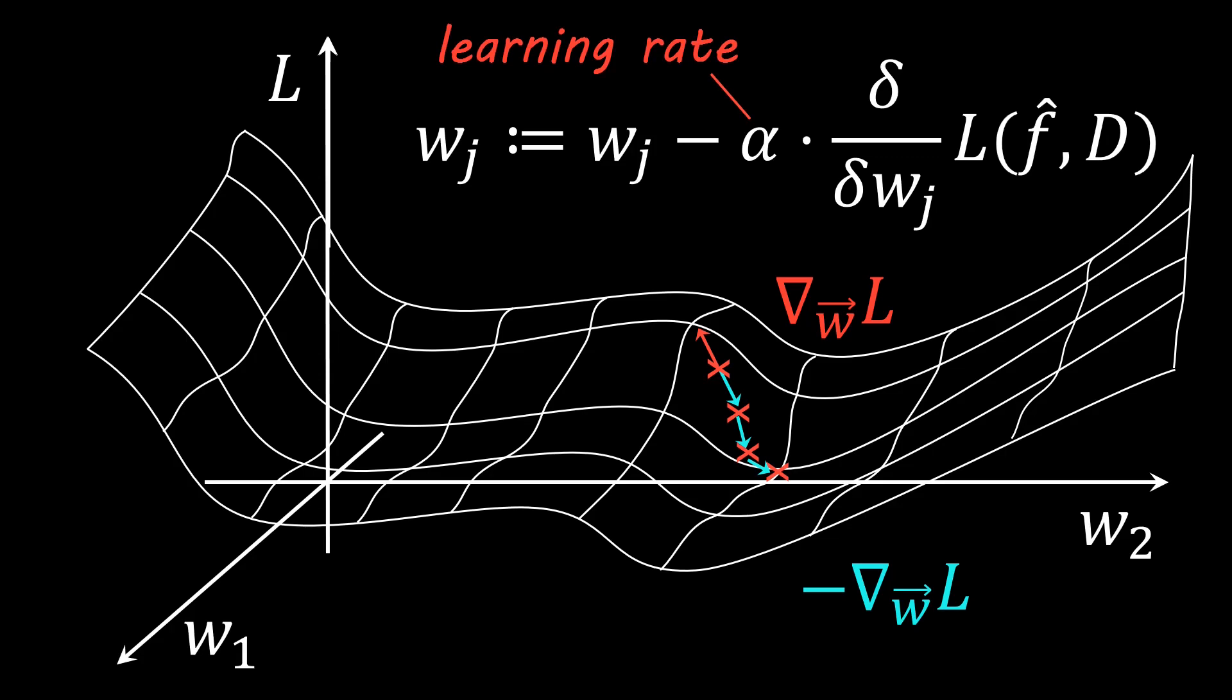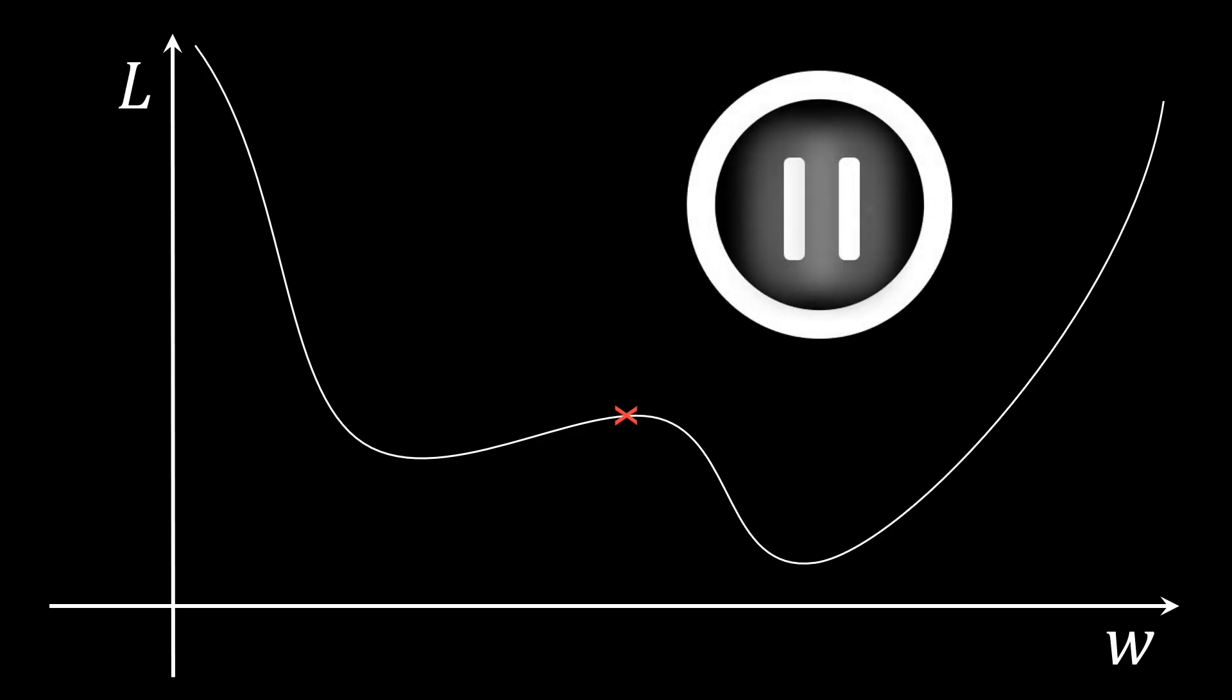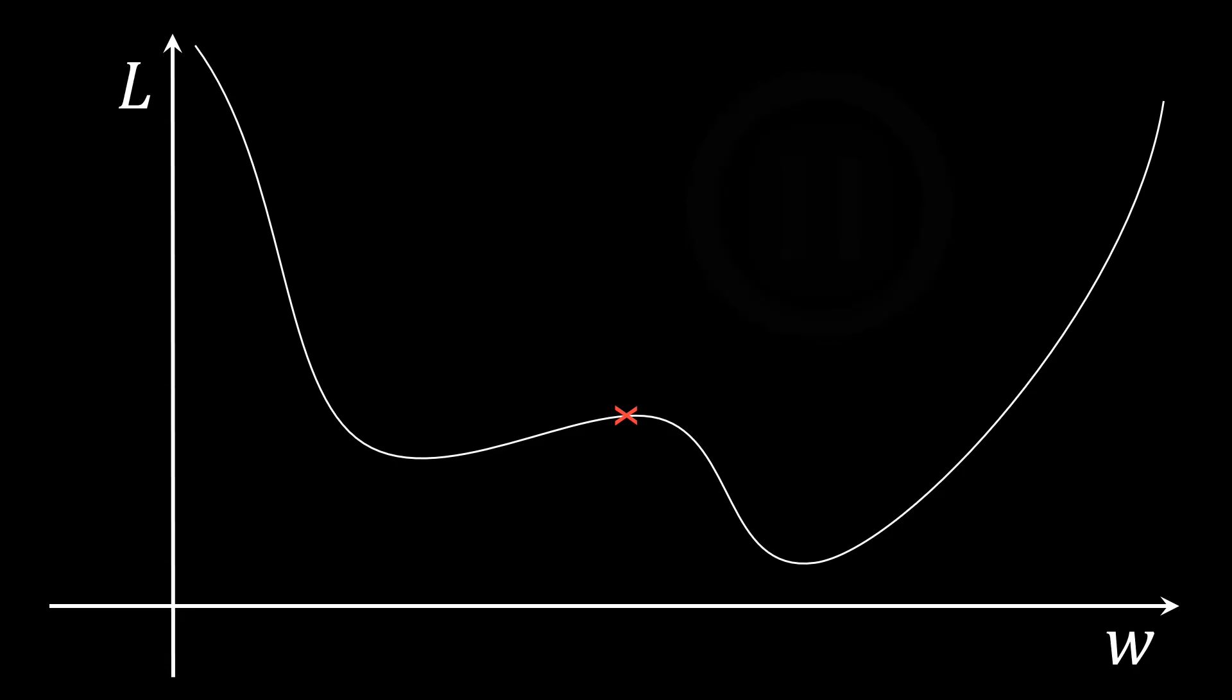Let us go back to a case where we aim to optimize a single parameter w. Consider the following initial guess. What might be the issue here? Pause the video and think for yourself how gradient descent would update this guess. Gradient descent updates the guess based on the local slope in the direction where the loss gets smaller. In the given example, the update would therefore head left until we reach the local optima.